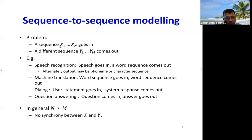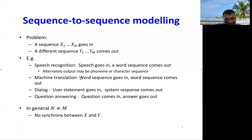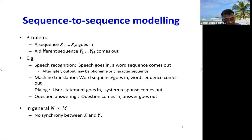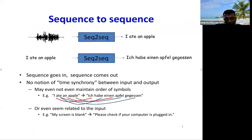The problem is: you have an input sequence x1 through xN of length N, and you want to compute an output sequence y1 through yM of some length M. Typical problems include speech recognition, where the input is a sequence of speech samples and the output is a sequence of words; machine translation, where the input is words in one language and the output is words in another; and dialogue systems. In general, the lengths of the input and output sequences may not be the same.